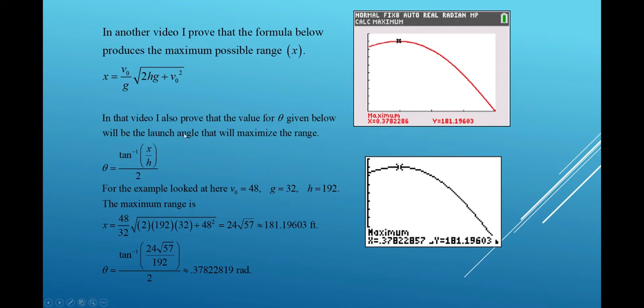I also proved that the angle, launch angle theta, that gives that maximum range is the inverse tangent of the maximum range, the x value computed here, divided by h, the initial height, and then that divided by two.